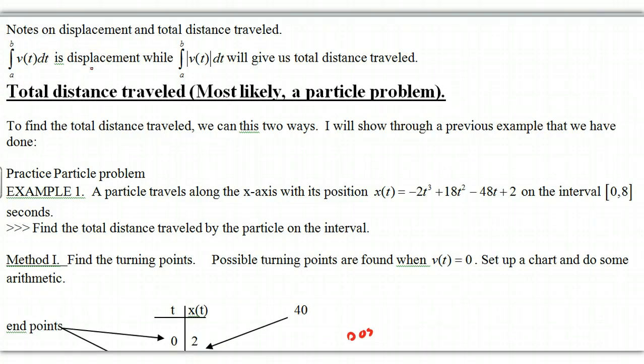That is your net distance traveled, where you started from as compared to where you finished. While if we take the integral from A to B of the absolute value of V of T, this will give us total distance traveled. So it will include all the going forwards, going backwards, and all those distances put together.